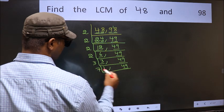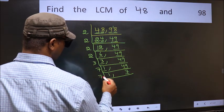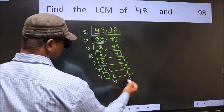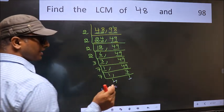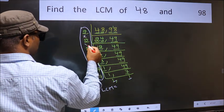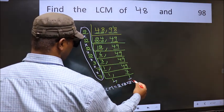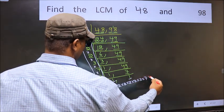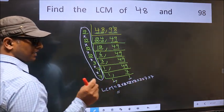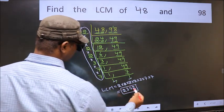So 7 sevens are 49. Now we have 7 here and 7 here. 7 is a prime number, so 7 ones are 7. We got 1 in both places. Our LCM is the product of these numbers: 2 × 2 × 2 × 2 × 3 × 7 × 7. When we multiply these numbers we get 2352. So 2352 is our LCM.